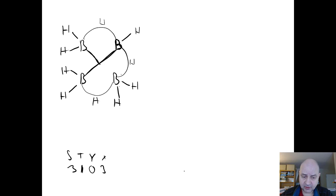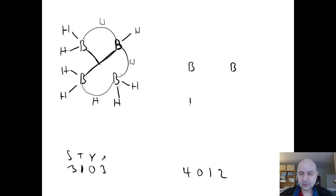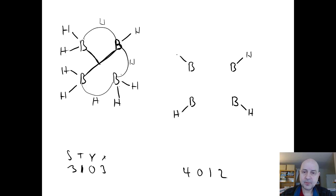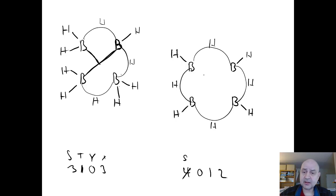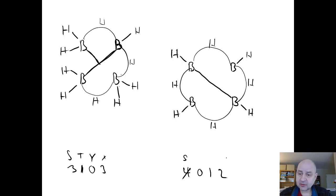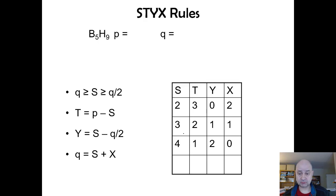For the second possibility (S=4, T=0, Y=1, X=2): again four boron centers with terminal hydrogens. Start with the four bridging hydrogens to build a symmetrical cluster. Then draw the boron-boron sigma bond — you can place it diagonally or across, it doesn't matter on a 2D surface. Two more terminal hydrogens finish the structure, and every boron center now has eight electrons.